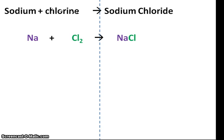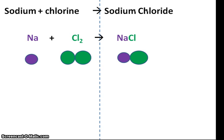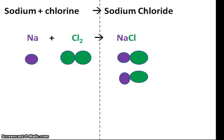Let's try another one. In this equation, we are looking at the reaction of one sodium atom with two chlorine atoms to make sodium chloride. As you can see, this is not balanced, as I have two chlorines on this side and only one on this side. So to start with, I'm going to add a whole other sodium chloride molecule. Now I have two atoms of chlorine and two atoms of chlorine. However, I only have one atom of sodium on this side, so I'm going to add another sodium atom.